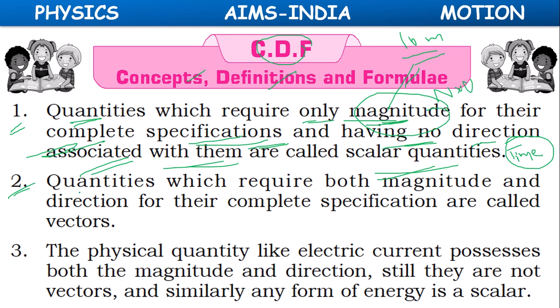Quantities which require both magnitude and direction for their complete specification are called vectors. Examples include velocity, force, acceleration, and displacement.